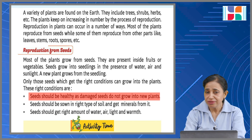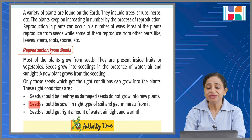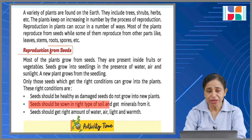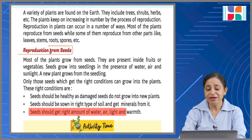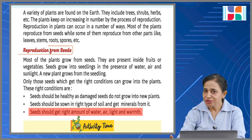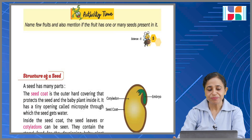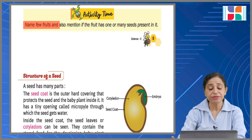If the seed is damaged in any way, it will not grow. Seeds should be sown in the right type of soil and get minerals from it. Seeds should also get the right amount of water, air, light, and warmth — all these things are very important for the growth of a plant. Activity time: name new fruits and mention if the fruit has one or many seeds present in it.